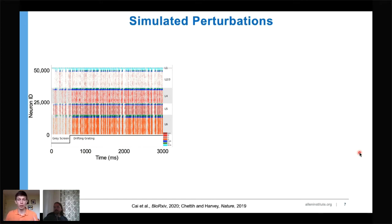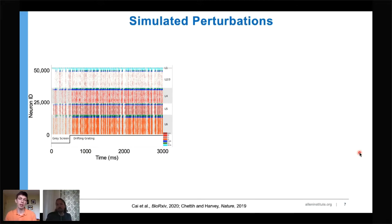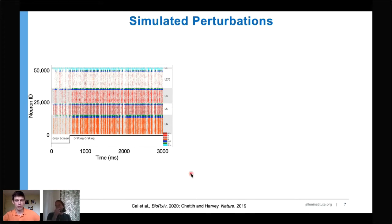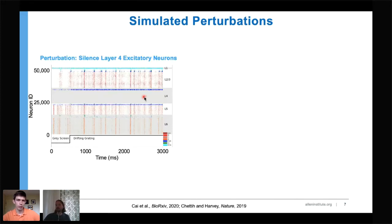Now that the model is ready, we offer it to the community but also continue working on several projects. One application is perturbations — a very active area experimentally — where models give much more control. For example, we can silence excitatory cells in layer four; layer four becomes completely silent but other neurons are strongly affected as well. We can do that for any cell of any type.